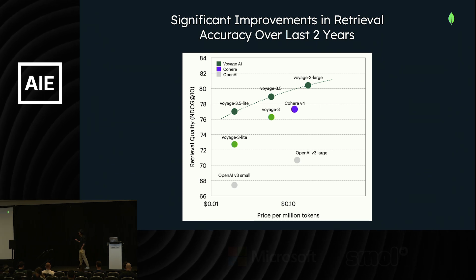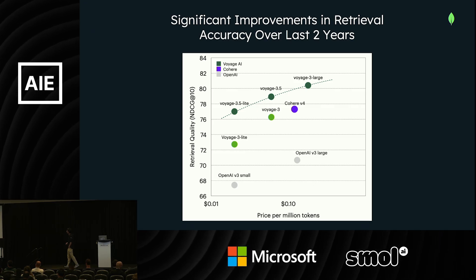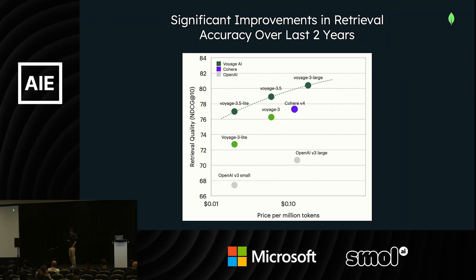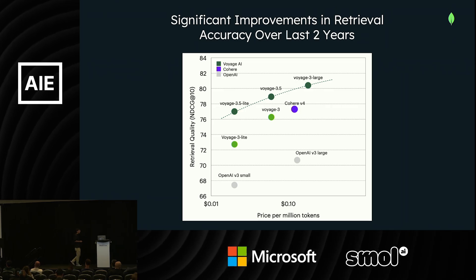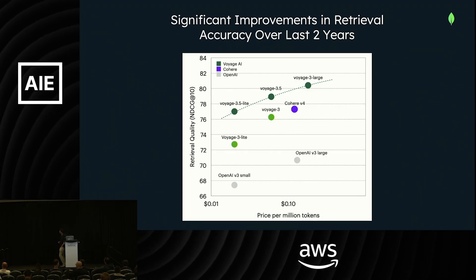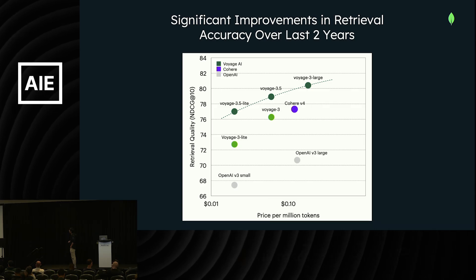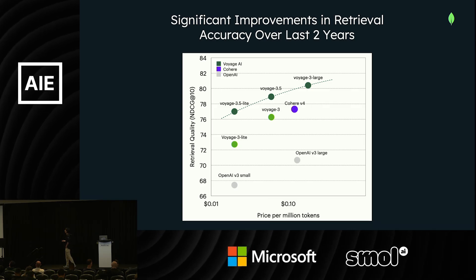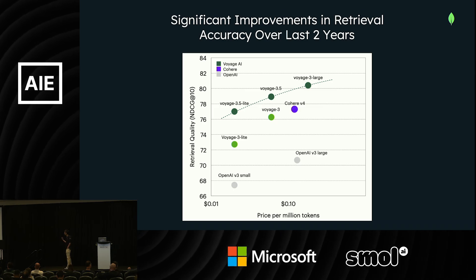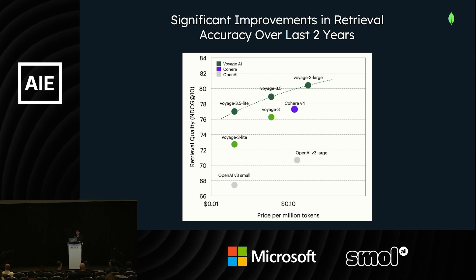We have seen significant improvements in retrieval accuracy in the last two years. When we started Voyage, OpenAI v3 had not yet launched — it launched about 1.5 years ago. In the last 1.5 years, Voyage has made significant progress, and Cohere has made some progress too. New models have much better accuracy with lower cost. Generally, we have a much better scaling law: the same number of parameters gives better quality, or the same quality requires fewer parameters, making it cheaper.